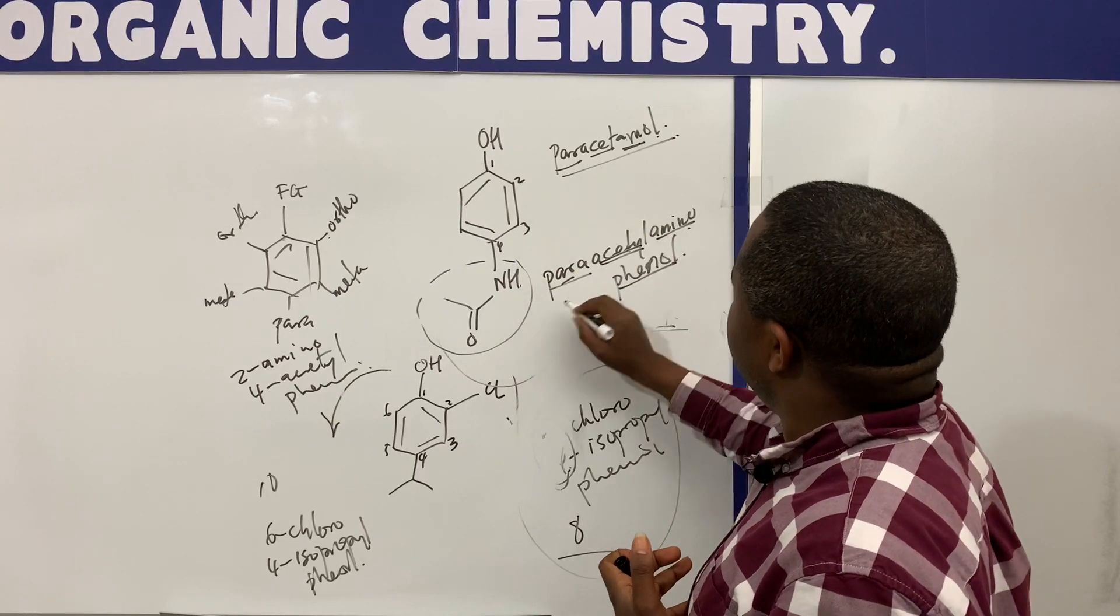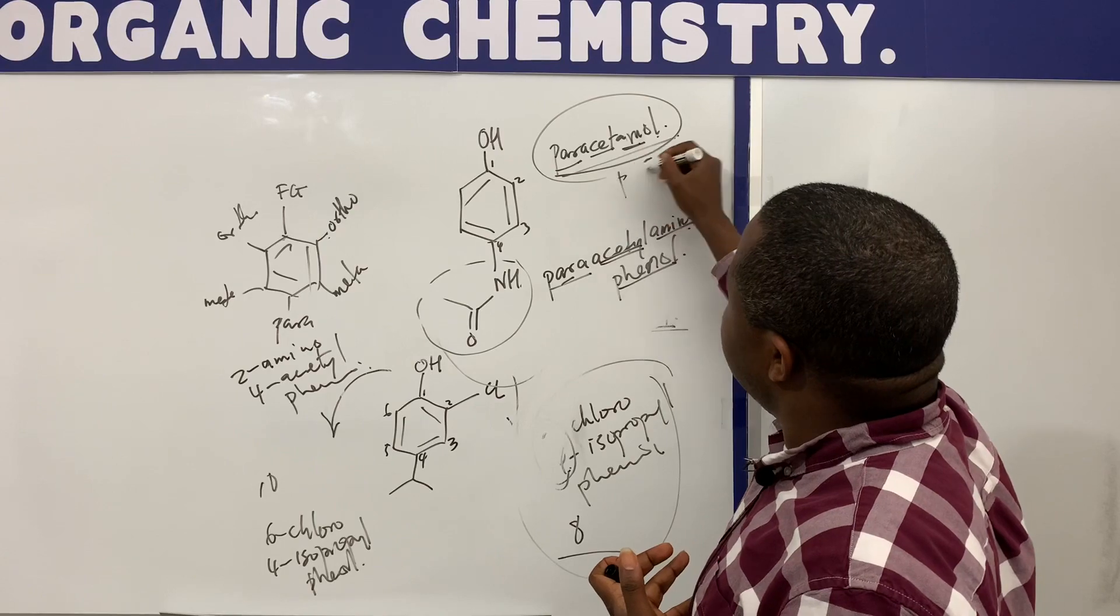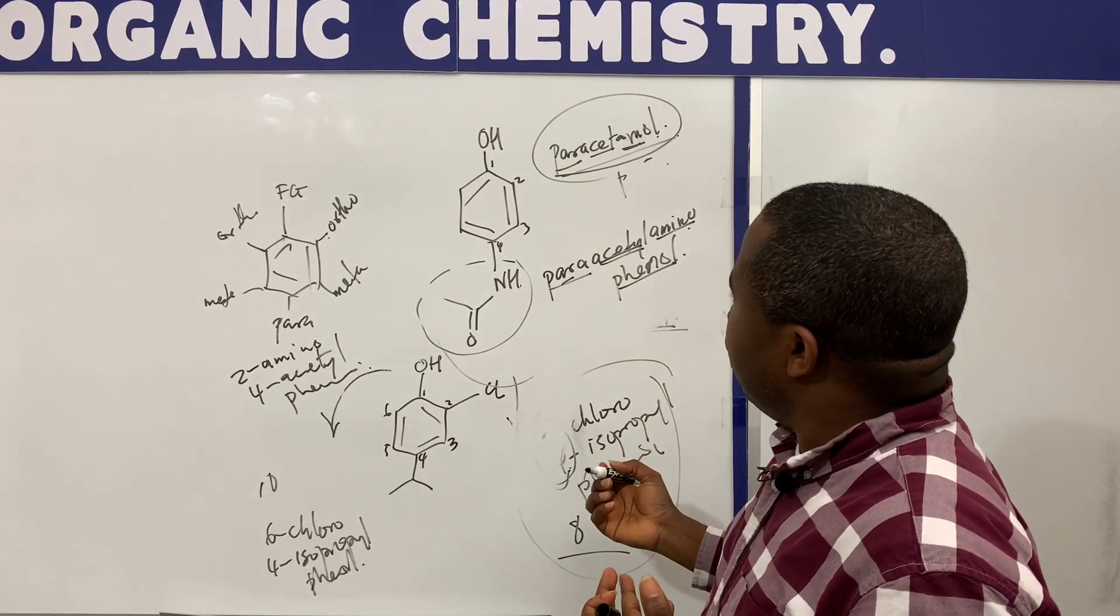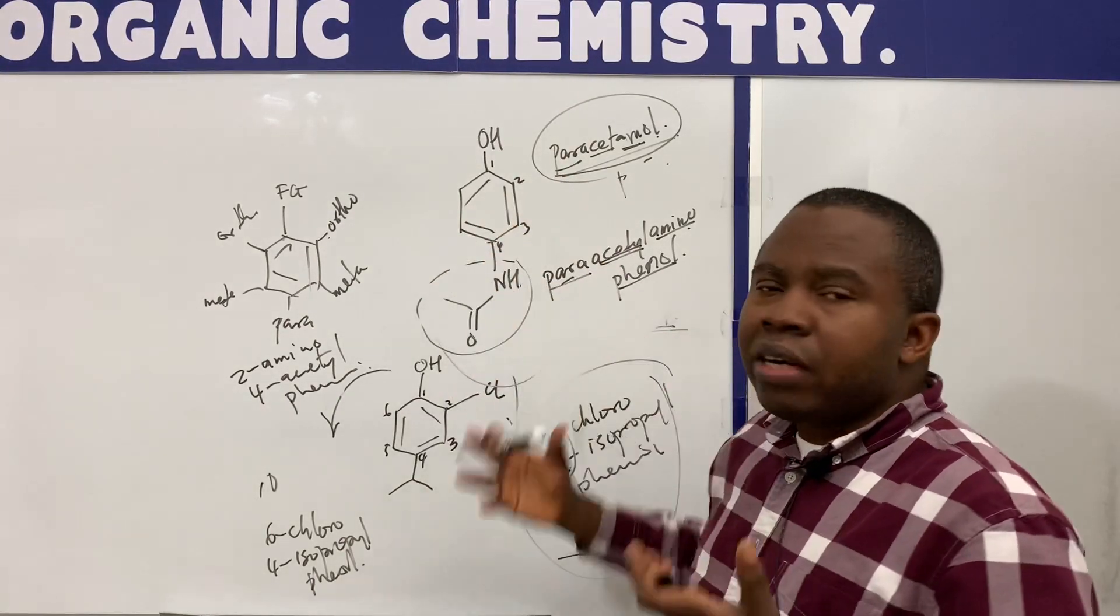So this is para-acetyl-amino-phenol and it is the brand paracetamol that we know. And that is a derivative of benzene. This whole thing is a derivative of benzene, and it's interesting that we can have things getting really complex from here, but they all follow the same convention of naming benzene derivatives.